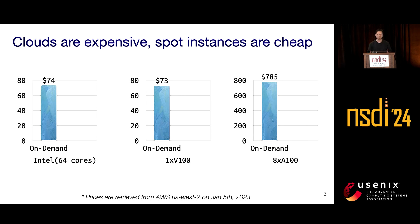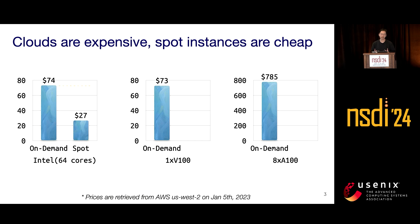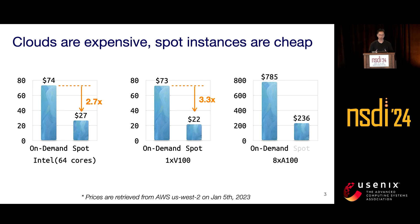Meanwhile, most cloud providers offer a resource type called spot instances, which can be a good opportunity to save cost. Taking the same instances as an example, the Intel CPU can save 2.7 times cost on spot instances, and similar things happen for V100 and A100 GPUs as well.